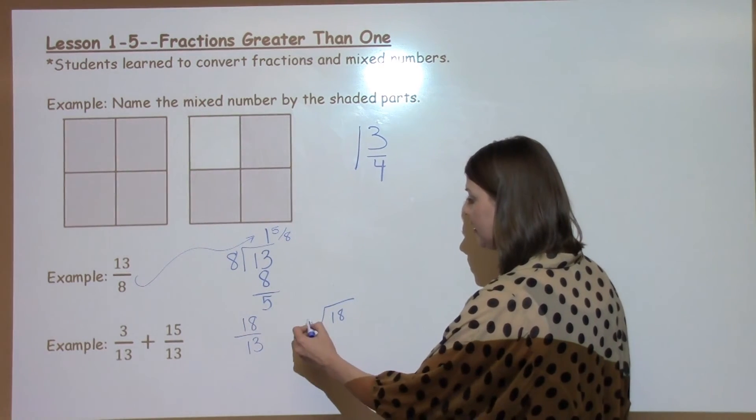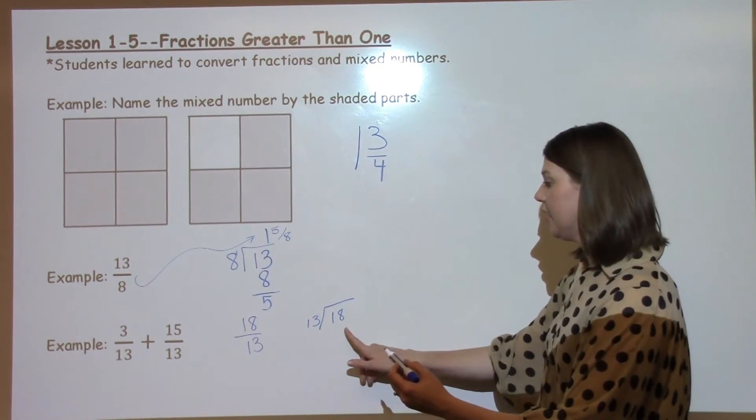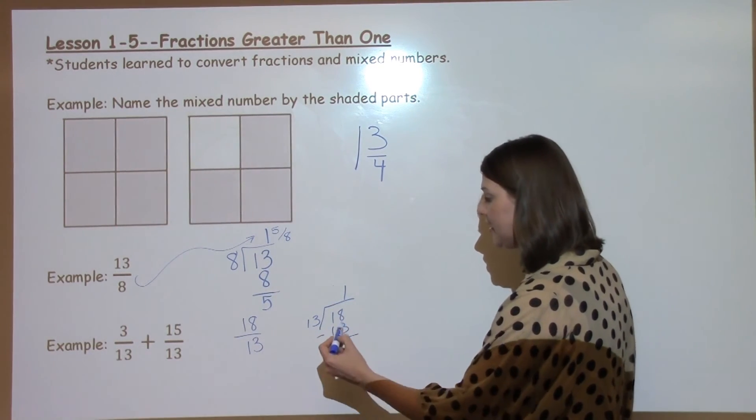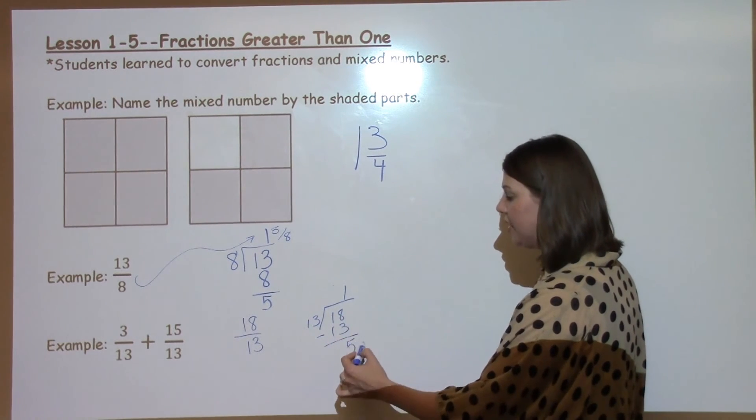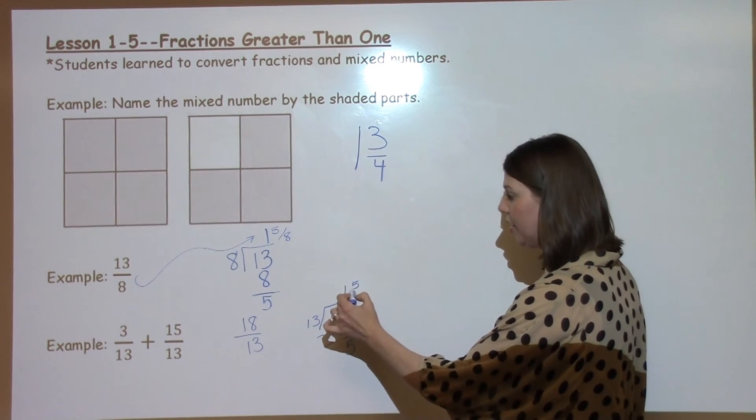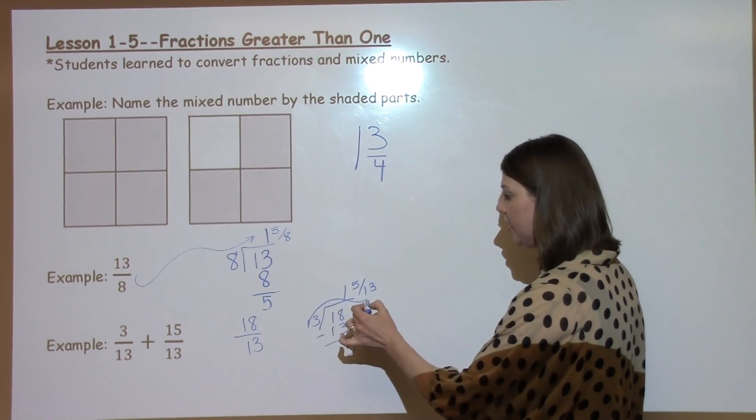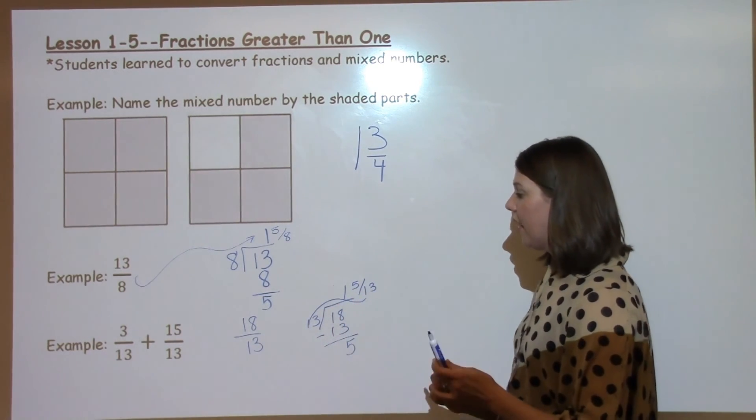So we take 18 divided by 13. 13 can go into 18 one time. When I subtract 18 minus 13, I get 5. Nothing left to bring down, so this 5 goes up into my numerator. And I've got my denominator, which comes from my divisor. So I've got 1 and 5 thirteenths.